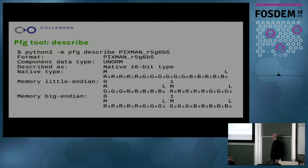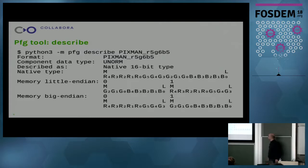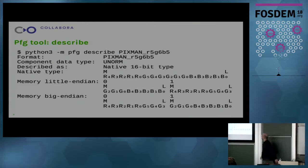Then we get the description of how the pixel format is stored in memory, both for little-endian and big-endian systems. You'll notice that in this case the little-endian and big-endian descriptions are different — the bytes are just swapped, because that's how this works in this case.